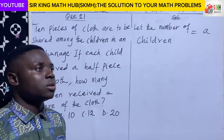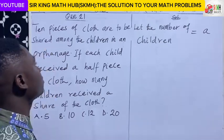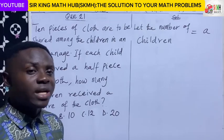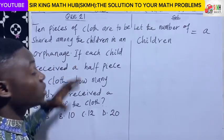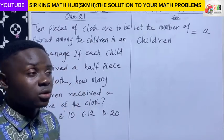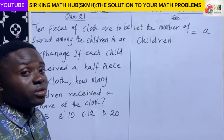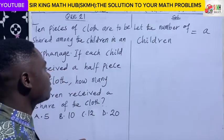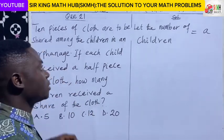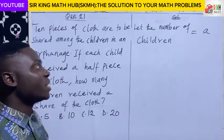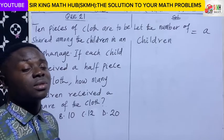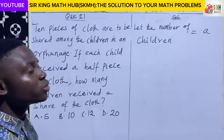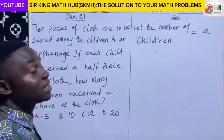Now, let's try to get an expression for each child's share, knowing that 10 pieces of cloth were shared. 10 pieces of cloth are to be shared among some number of children. After the sharing, each child received a half piece. So that is all about the question.